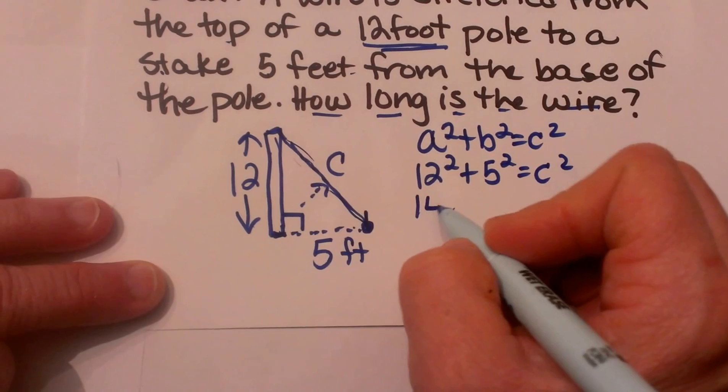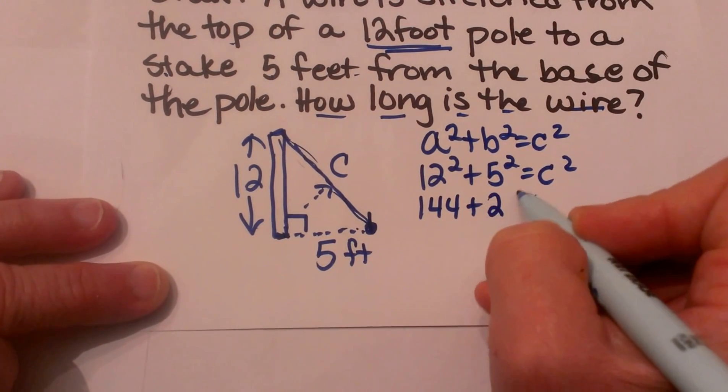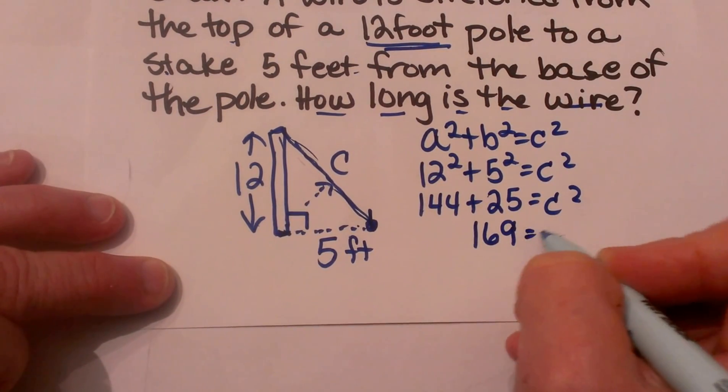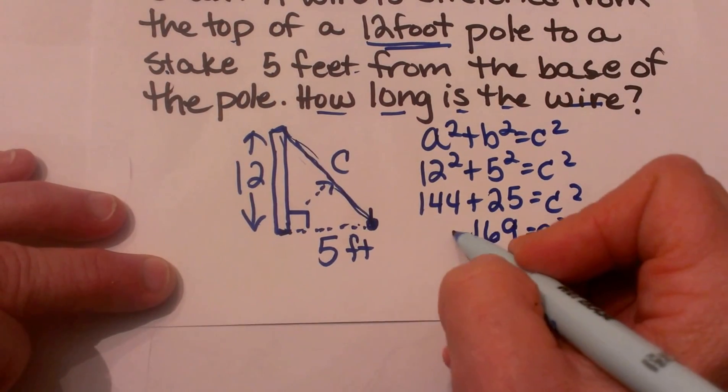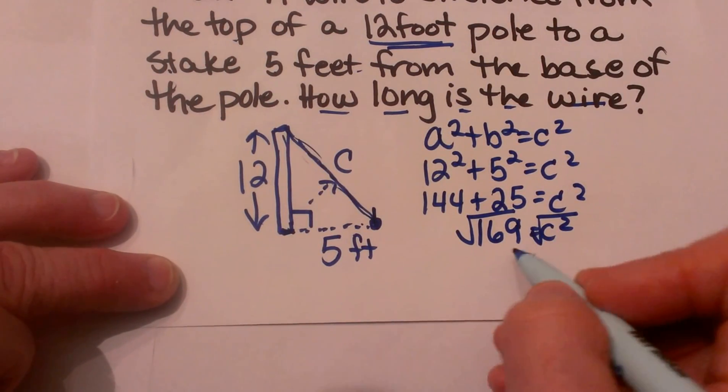12 squared is 144. 5 squared is 25. And those add to 169. So 169 equals c squared. Let's take the square root of both sides. The square root of 169 is 13.